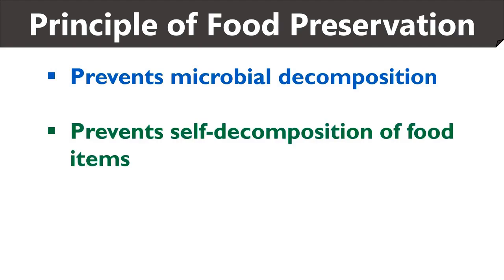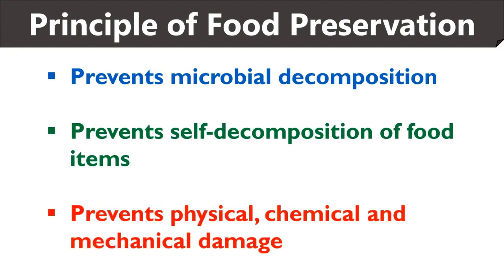Food preservation prevents the self-decomposition of food items by either inactivating food enzymes through chemical methods like pickling, salting, and sugaring, or by eliminating pro-oxidants using antioxidant agents. Food preservation methods also prevent physical, chemical, and mechanical damage caused due to rancidity, flavor encapsulation, and bruising.